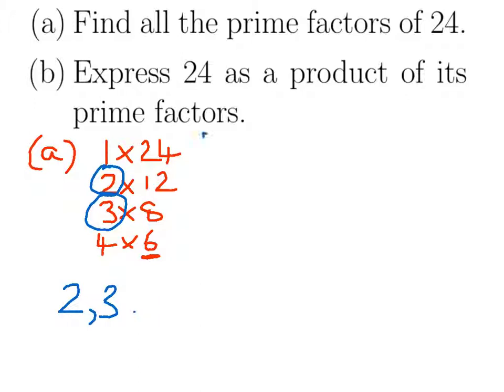For part B, we need to express 24 as a product of its prime factors. Product means multiply, so we need to find a way of multiplying the prime factors of 24, which are 2 and 3, together to make 24.